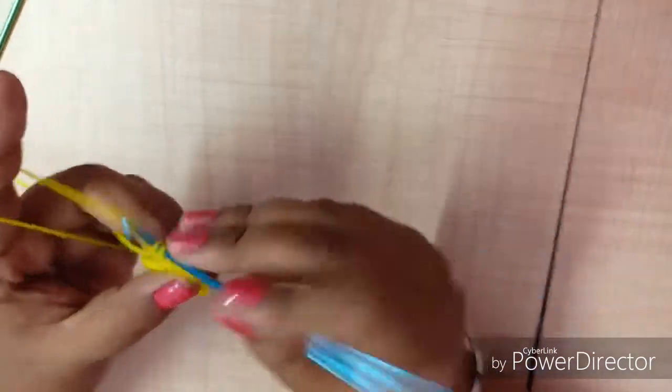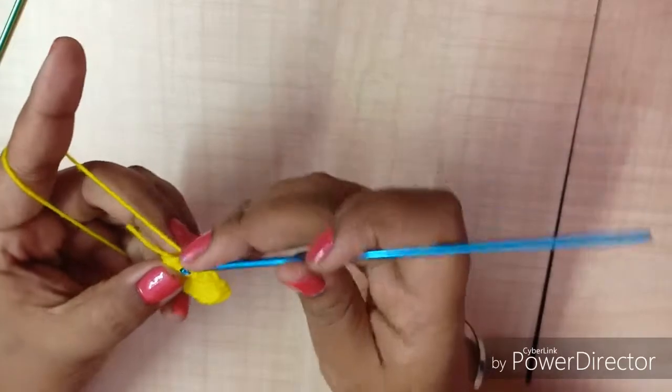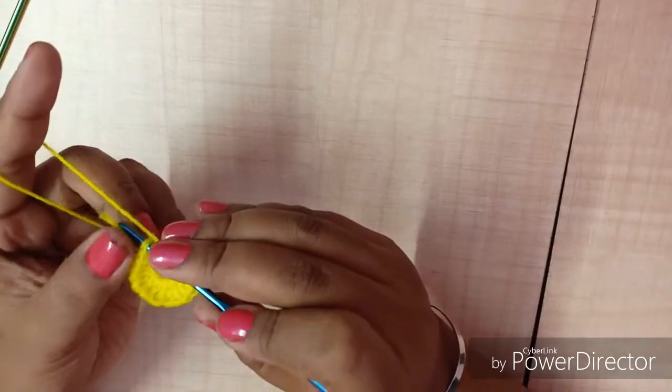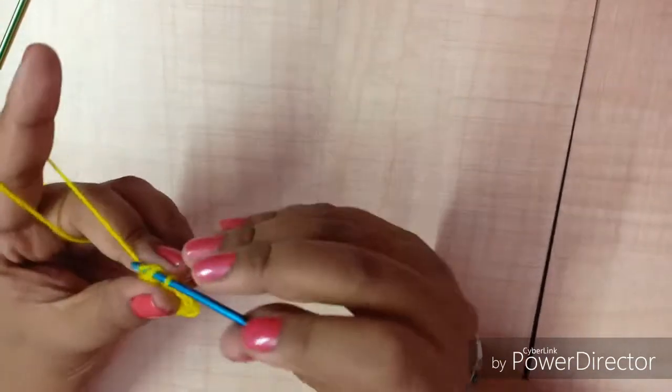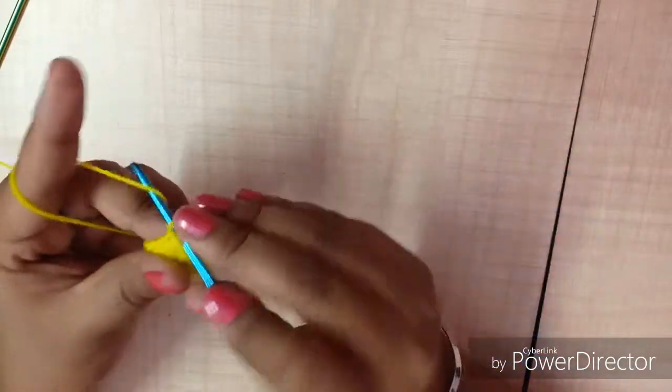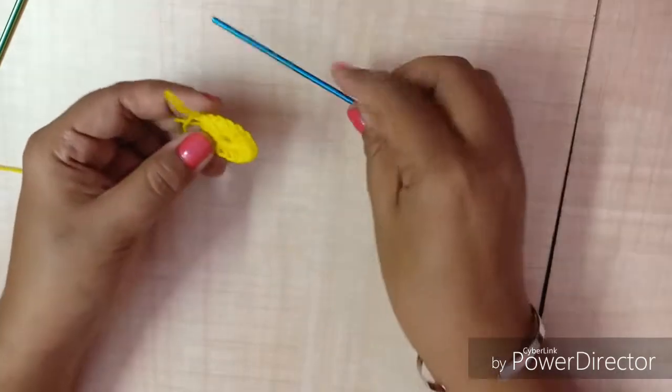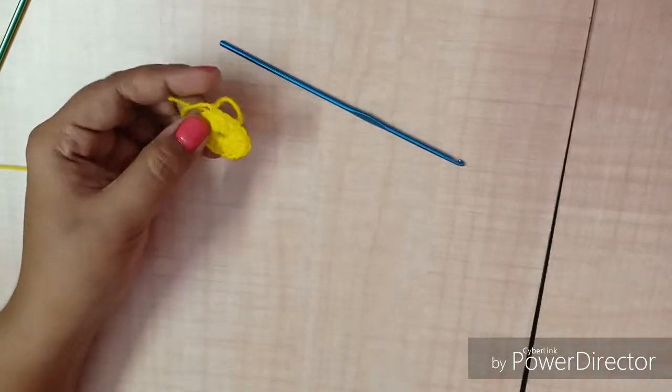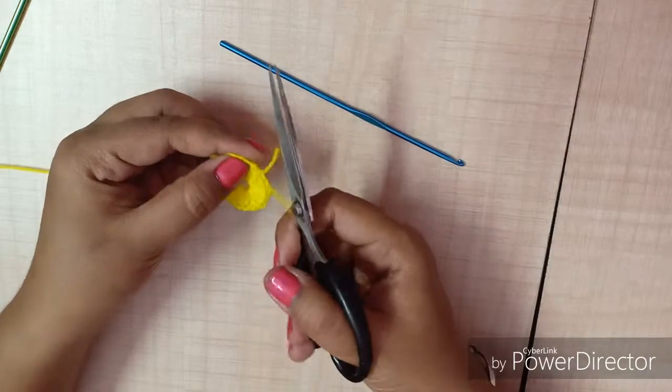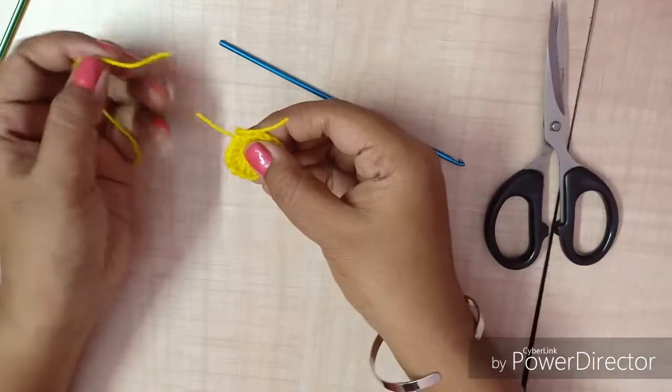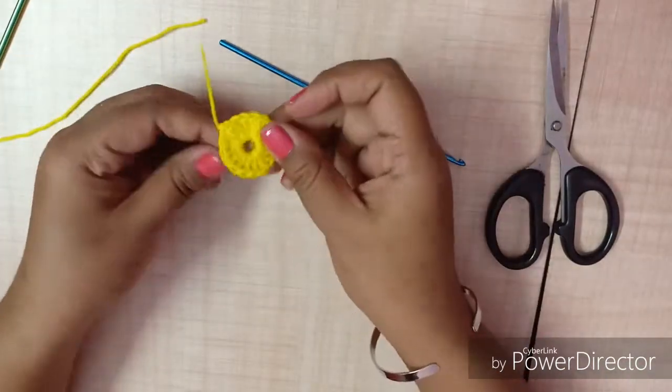And the last one. Then insert your hook into the upper portion of your last stitch and make a knot. Cut your yarn here. And your round crochet is ready.